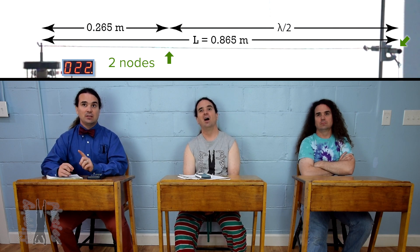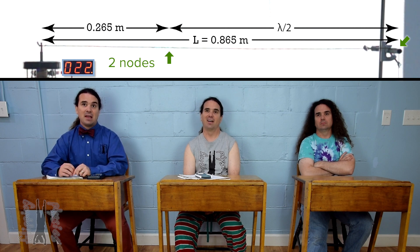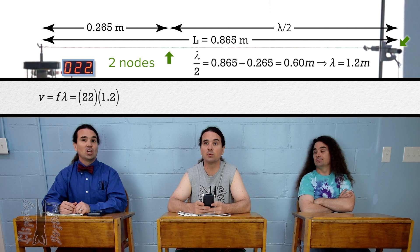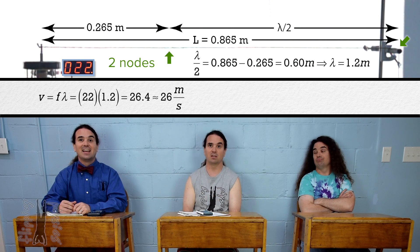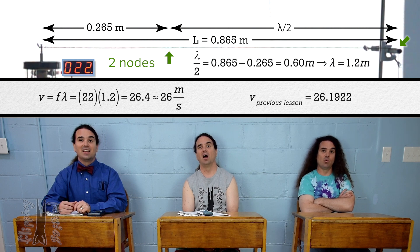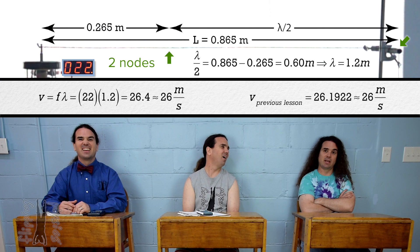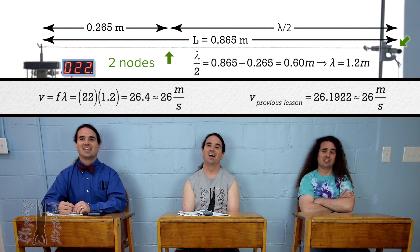Okay. There is half a wavelength between the two nodes on the string and we know that distance is the length of the string minus 0.265 meters or 0.60 meters. So, the wavelength of the standing wave pattern on this string at 22 hertz is 1.2 meters. And we know the speed of the wave equals frequency times wavelength or 22 times 1.2 which equals 26.4 or 26 meters per second with two significant digits. And in a previous lesson, we determined the speed of this wave to be 26.1922 or 26 meters per second with two significant digits.